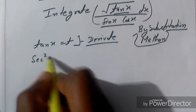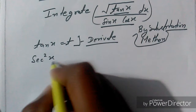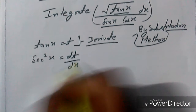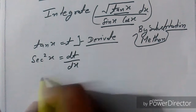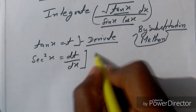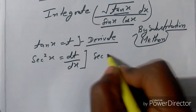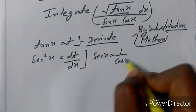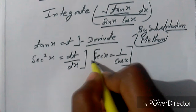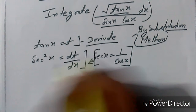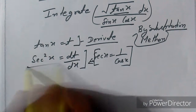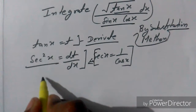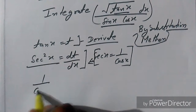The derivative of tan(x) is sec²(x), so sec²(x) equals dt/dx. From trigonometry, sec(x) is equal to 1/cos(x). Now we put this formula in place of sec²(x).